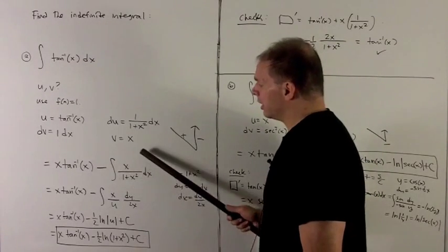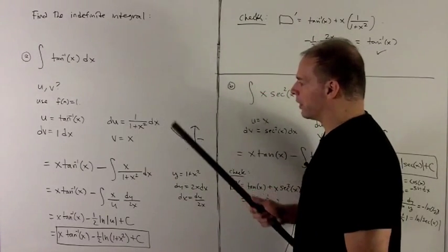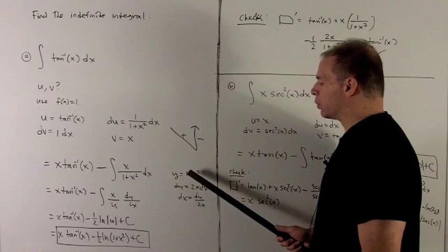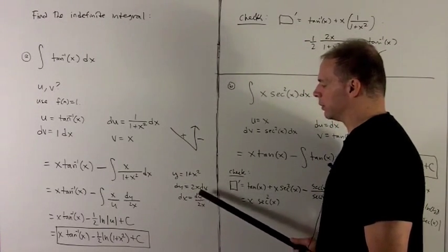As I noted, this is now just a u substitution. We'll use y since we're already using u for integration by parts. So y is one plus x squared, dy equals 2x dx, or dx equals dy over 2x.